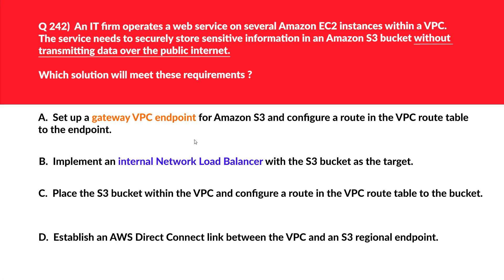Now let's look at this question. We've tackled similar questions where data shouldn't be traversing over the public internet — that's the requirement here. We'll first look at option A: set up a gateway VPC endpoint. A gateway VPC endpoint allows secure communication between the VPC and Amazon S3 without using the public internet, which is what the question is looking for. Let's park this.